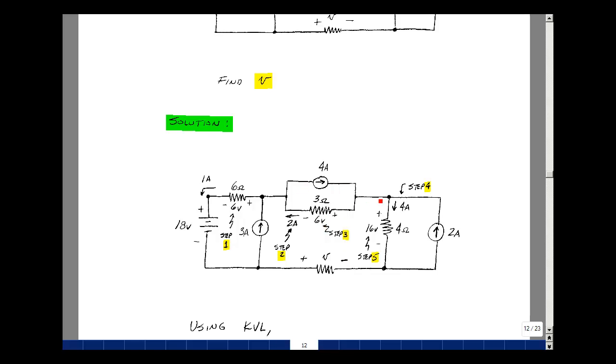I have 4 amps entering this node. I have 2 amps entering the node. I have 2 amps leaving the node, so that would make this current equal to 4 amps. In other words, I have 2 entering, 2 leaving, 4 entering, and I need another 4 to leave.